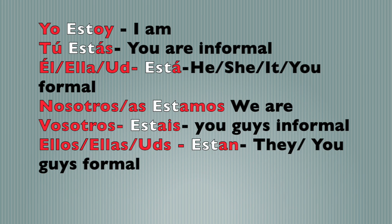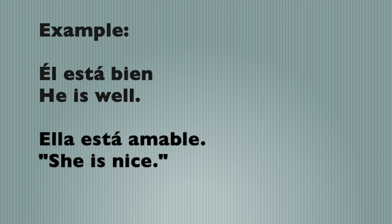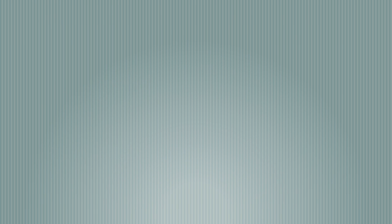Notice that él, ella, and usted have the same conjugate endings. That's why, if you're taking Spanish lessons or Spanish classes in school or high school, you're going to see them grouped together — because they're going to have the same endings, including ellos, ellas, y ustedes. Remember that in Spanish, the verb will be conjugated according to the personal pronoun. Por ejemplo, if I wanted to say he is well, él está bien, or she is nice, ella está amable. Because the verb estar is so integral to the Spanish language, you will find it popping up all over the place. For example, observe how bienestar refers to well-being and malestar refers to discomfort.